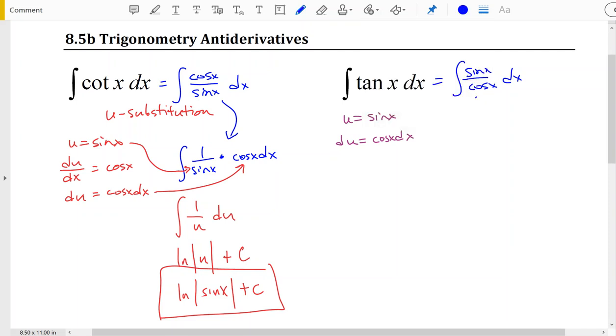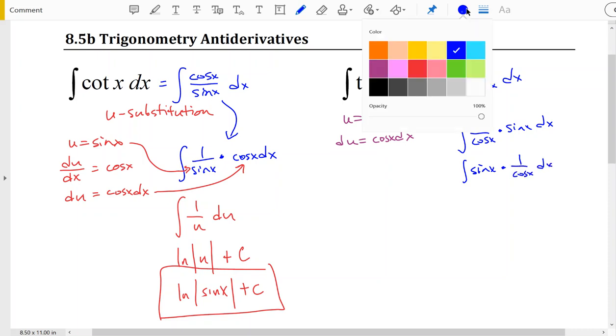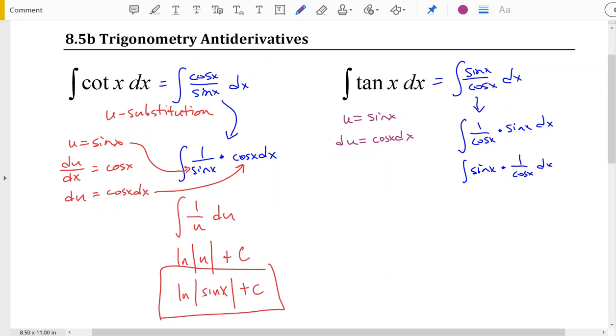And trying out the same kind of substitution, we know that this is equal to the antiderivative of 1 over cosine of x times sine of x dx. Or it might be more helpful for us to write it sine of x times 1 over cosine of x dx. We can still plug our u in for sine of x, 1 over u. But then when we try to plug in our du, it doesn't match up. Du doesn't equal 1 over cosine of x dx. It equals cosine of x times dx.